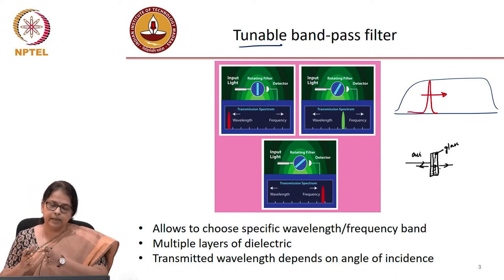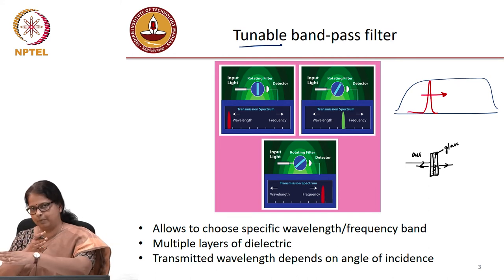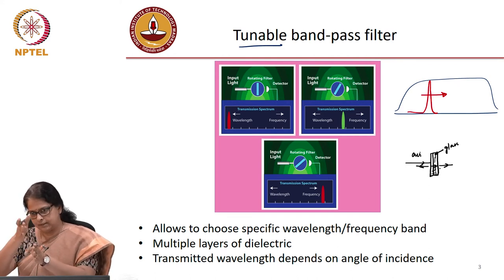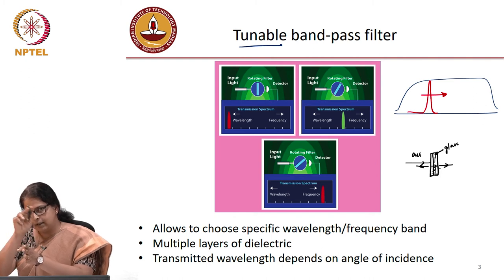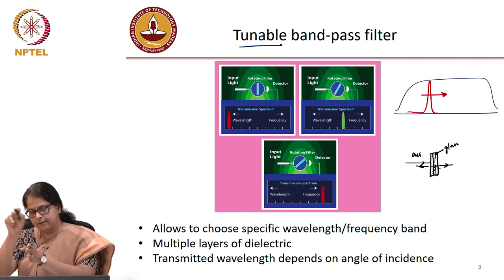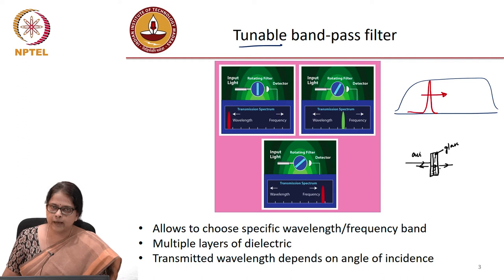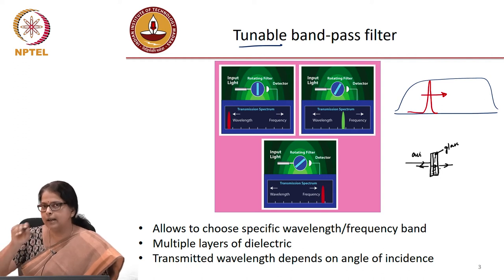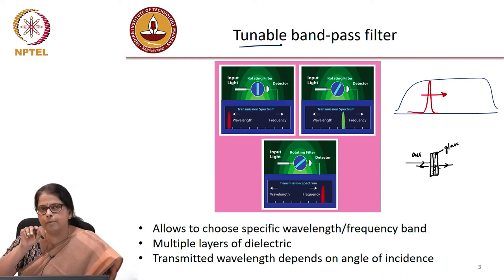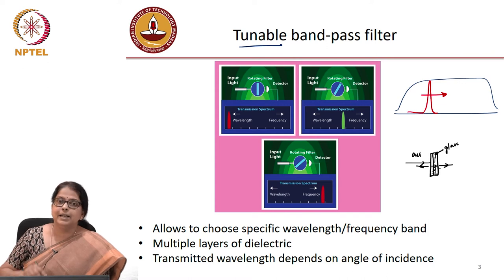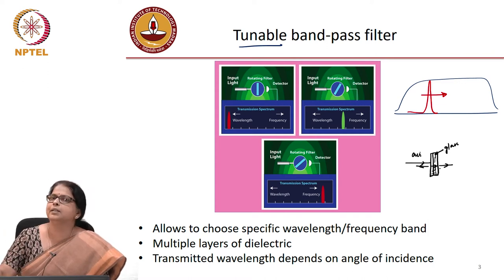The dielectric material is transparent, so it allows light to pass through. Depending on the number of layers, there are multiple reflections among these layers. What will be allowed to pass through is that wavelength for which there is constructive interference.